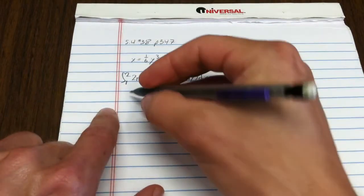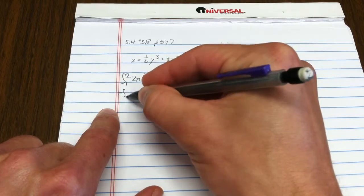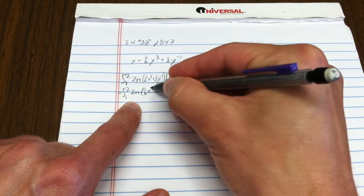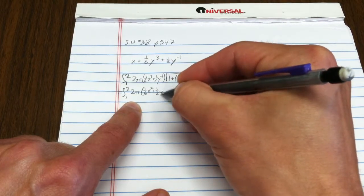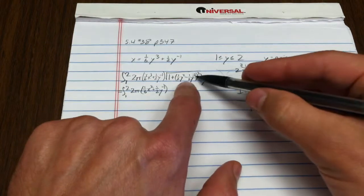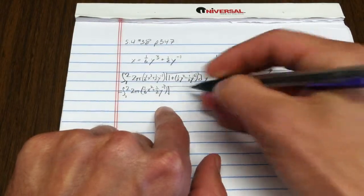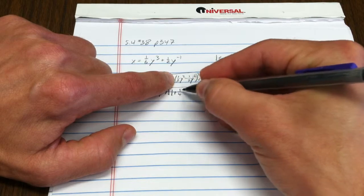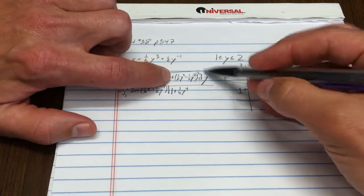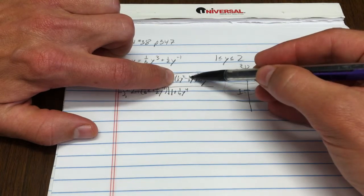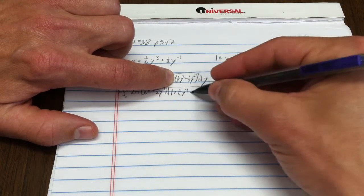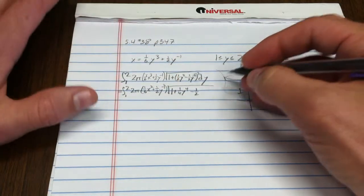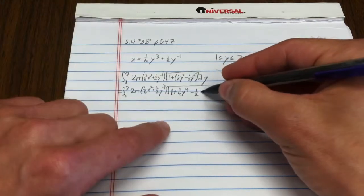That piece there is going to simplify in a sort of classic way, so pay close attention. This piece right here is going to simplify in a very particular way. I've got one. The first piece times itself gets me one-fourth y to the fourth. The middle term is going to be a half times a half, but then I'm going to have two of them, so that's going to be negative a half. Then y squared times y to the negative two is just going to give me a constant, so I just have negative a half. The last term is positive one-fourth y to the negative four.